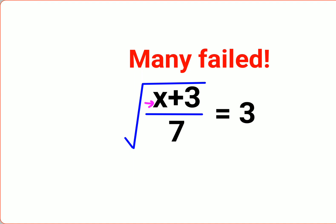Now in this case, whenever you have a root of x plus 3 upon 7 equals to 3, the first step is to take squares on both sides so that this square and the root will cancel. You will have x plus 3 upon 7 equals to 3 square, which is 9.